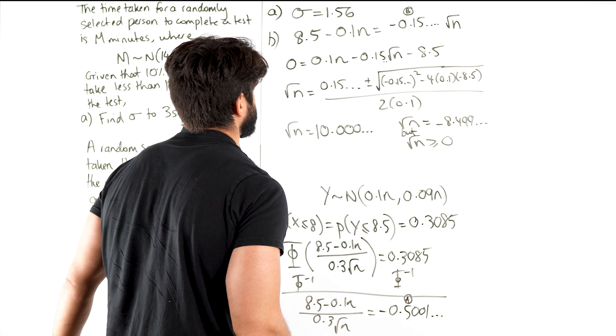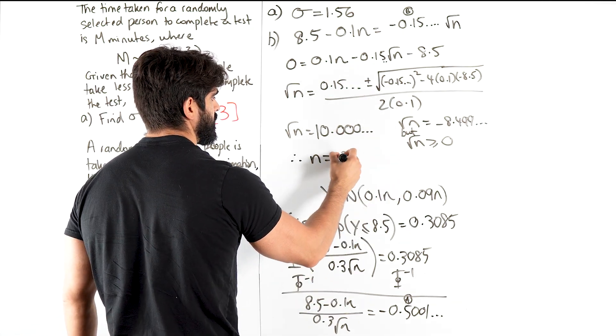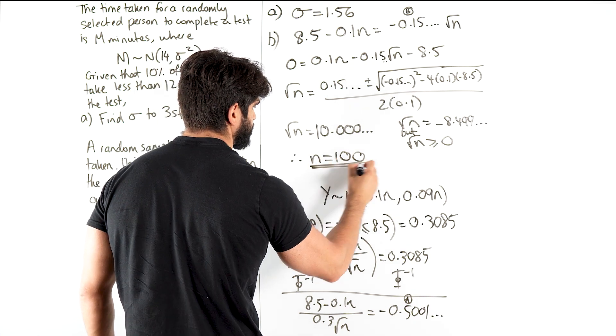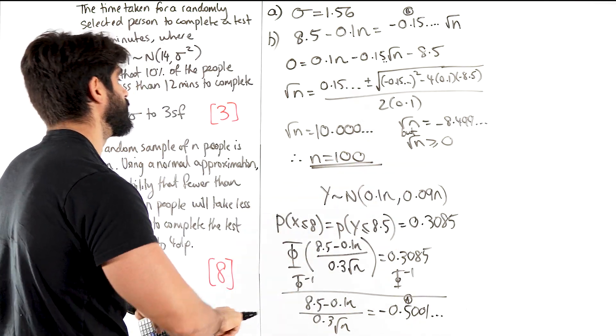Okay, therefore n, when you square that, n has to be an integer, n is 100. Okay, and that is your solution. That's a really intense question.